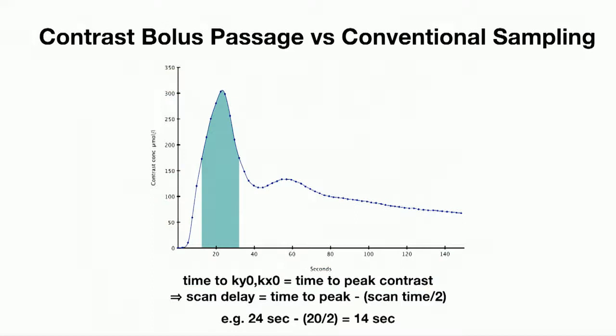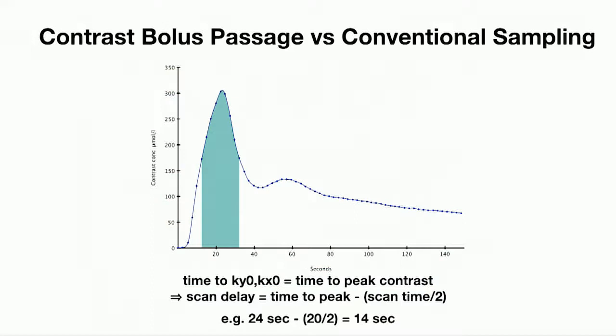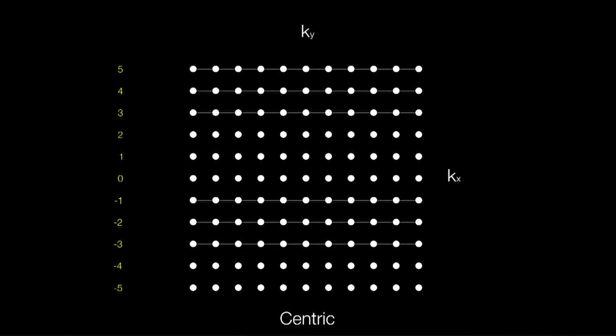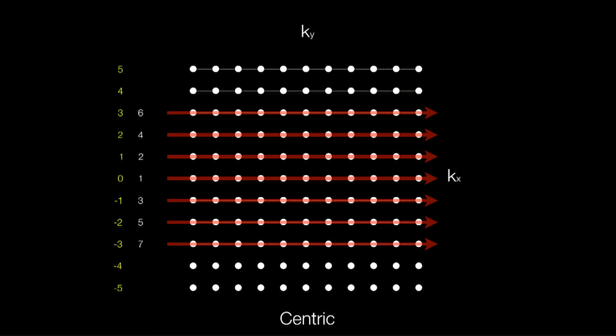This led to the idea that we would sample the centre of K-space earlier on — front-loading it. That allows us to move to what we call centric encoding, and we can then move to fluoroscopic triggering where we can actually watch the contrast coming in and start the scan when the contrast is in the right place. The idea is that we do the central line first and then go either side all the way out to the edges of K-space.